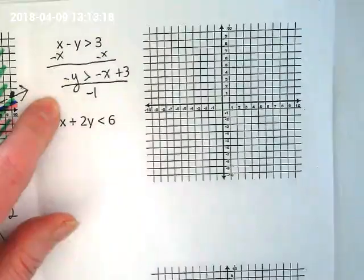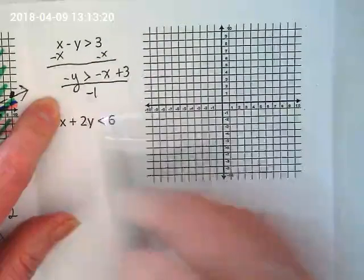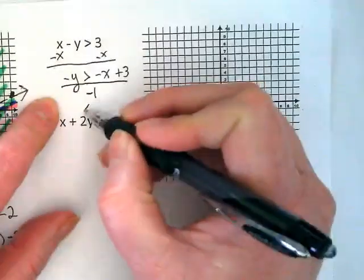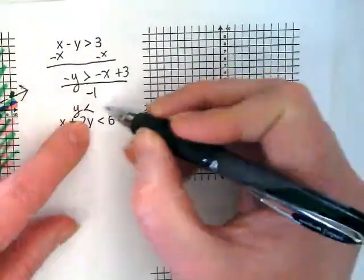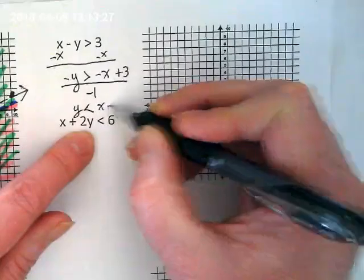Perfect. All the negatives will become positive, and all the positives will become negative. What happens to the symbol? It flips. Okay, so Y is less than X minus 3.